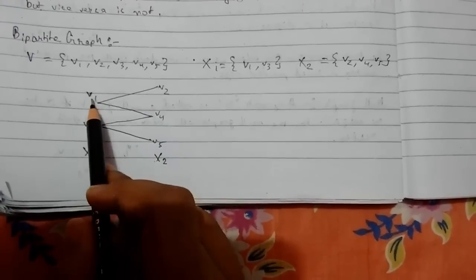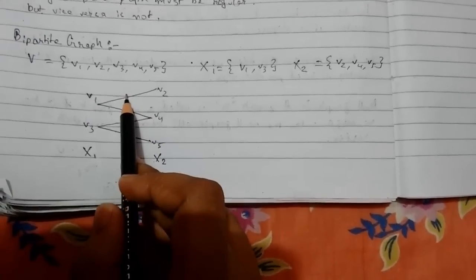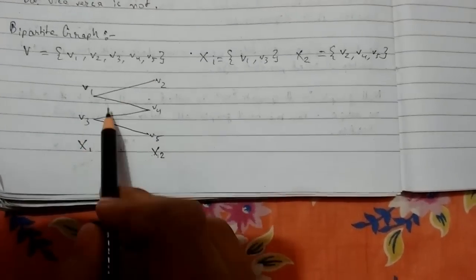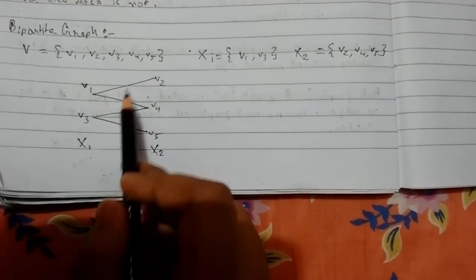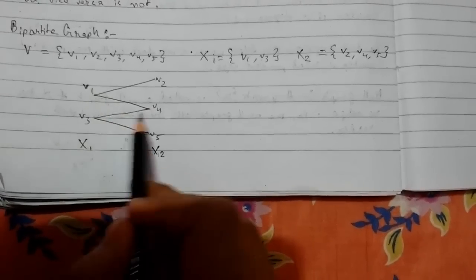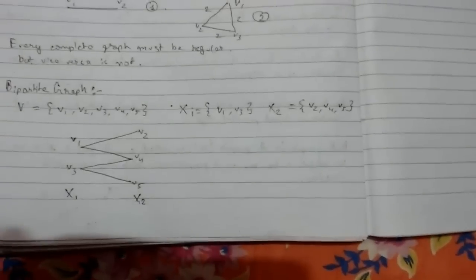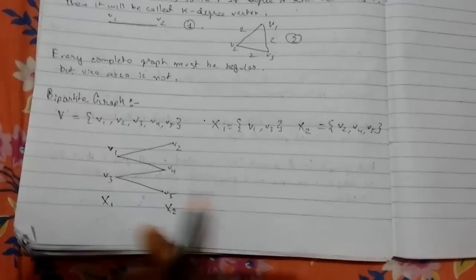So from v1 is incident - suppose this is the edge which is incident to both x1 and x2. See, all the edges satisfy the condition. This is the bipartite graph.